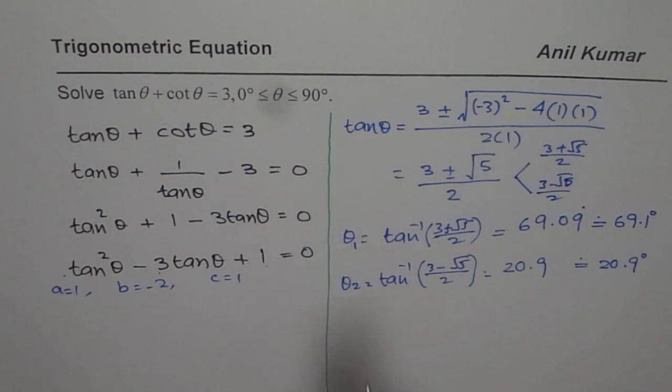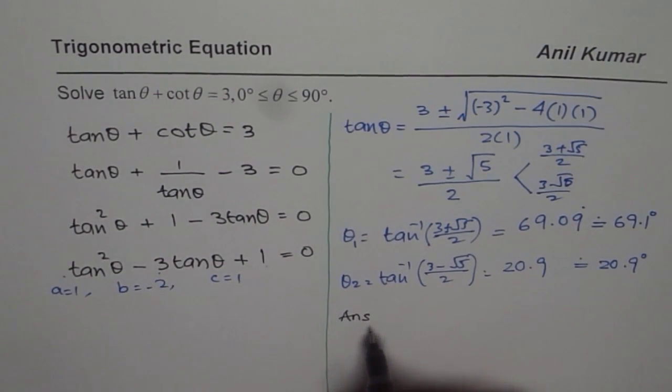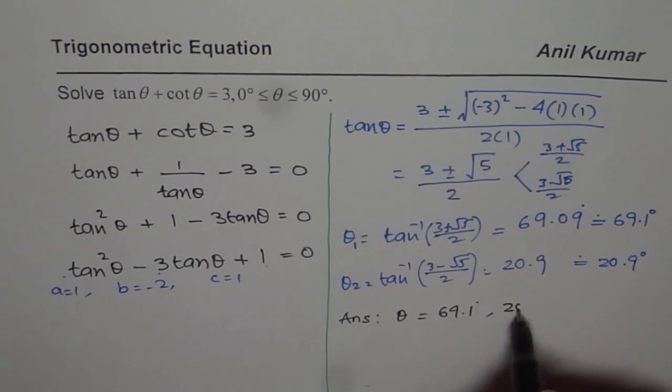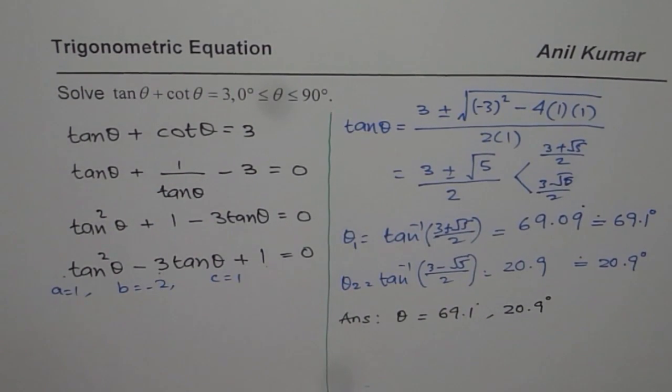So we get our answer and the answer is the solution of the equation is θ equals 69.1 degrees and 20.9 degrees. So that is how it could be solved.